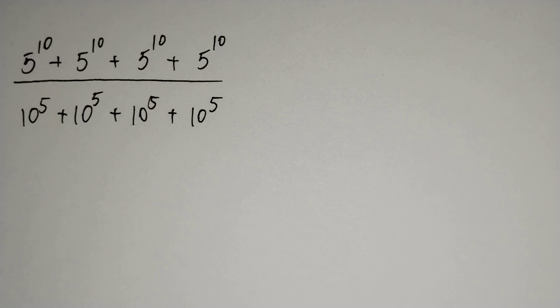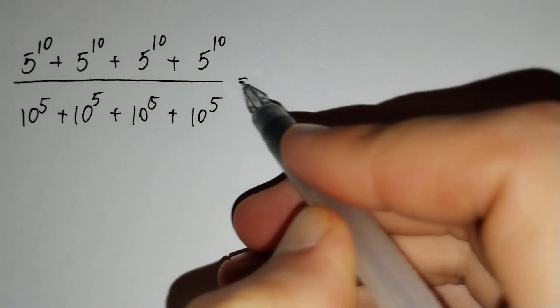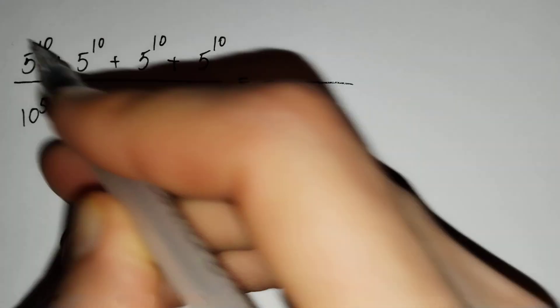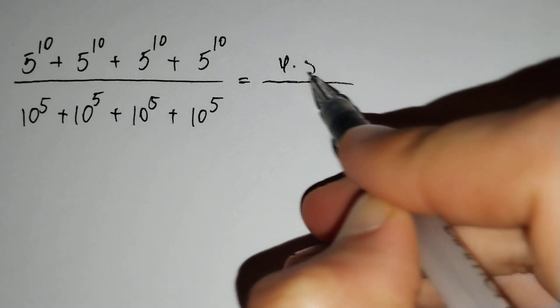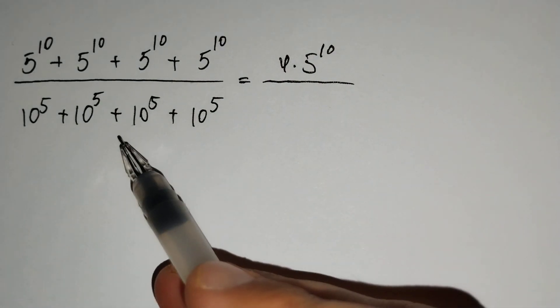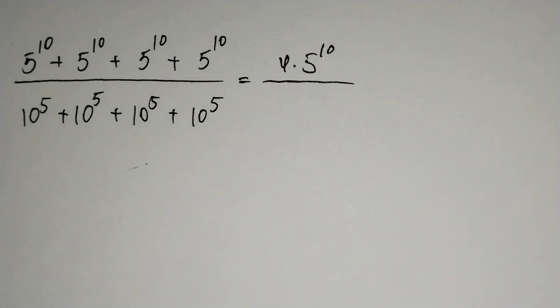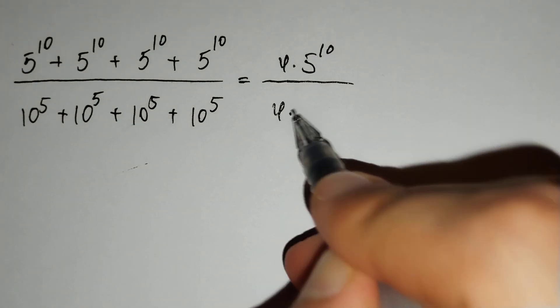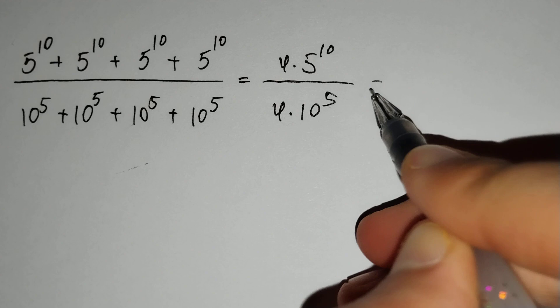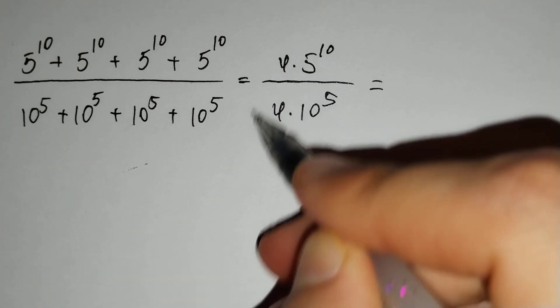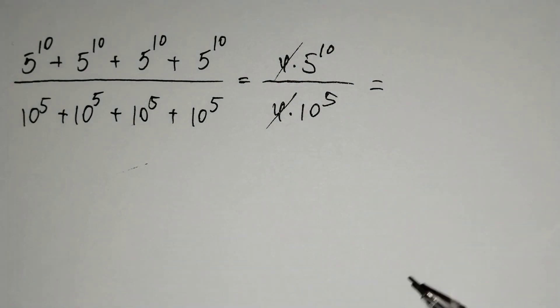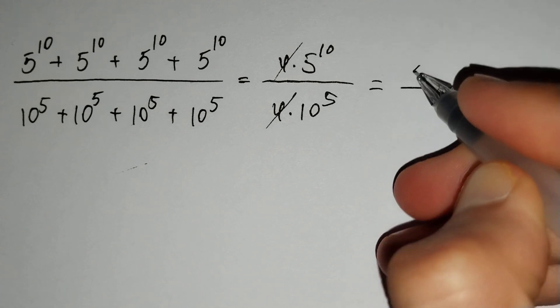Hi everyone, in this video we will solve this problem. In the numerator of our fraction, this is equal to 4 times 5 to the power 10, and in the denominator of our fraction, this is equal to 4 times 10 to the power 5. 4 and here 4, they are same, that's why we may cancel it. This is equal to 5 to the power 10 over 10 to the power 5.